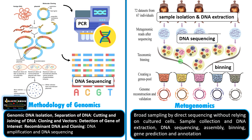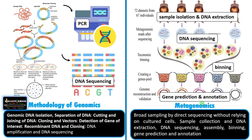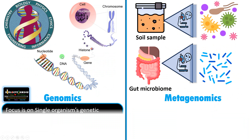After assembly, taxonomic binning is performed — the process of grouping sequences based on similarity to identify different individual microbes and different species. After binning, you can see a gene pool that belongs to a single species. Finally, gene prediction involves identifying genes based on sequences and predicting their functions.